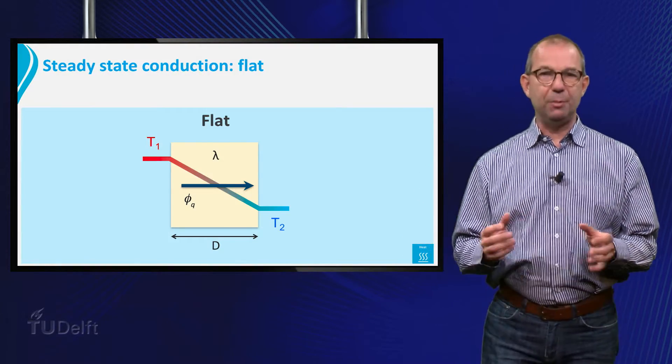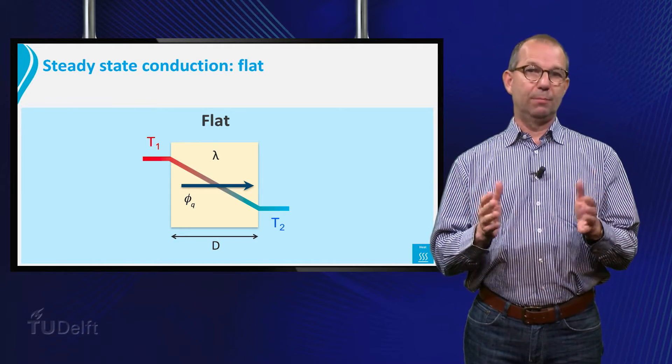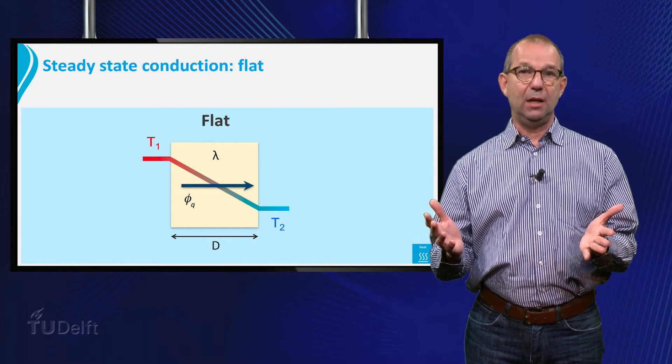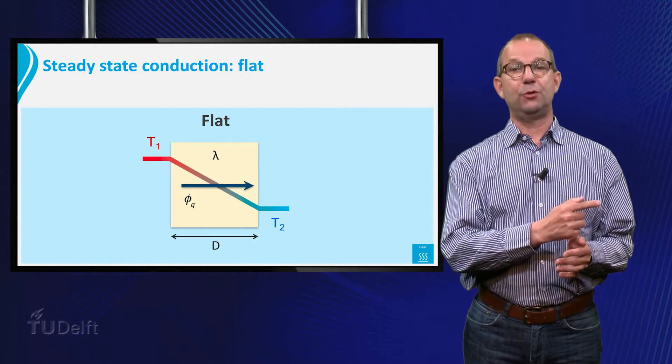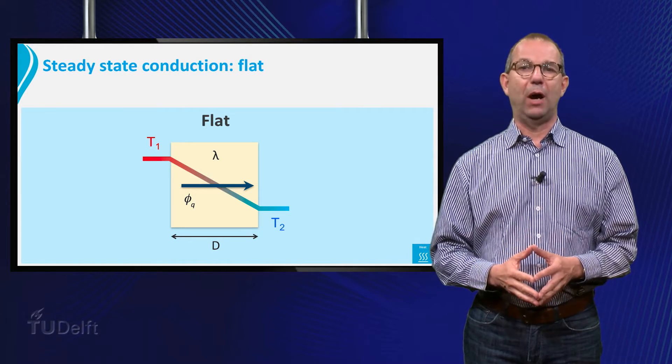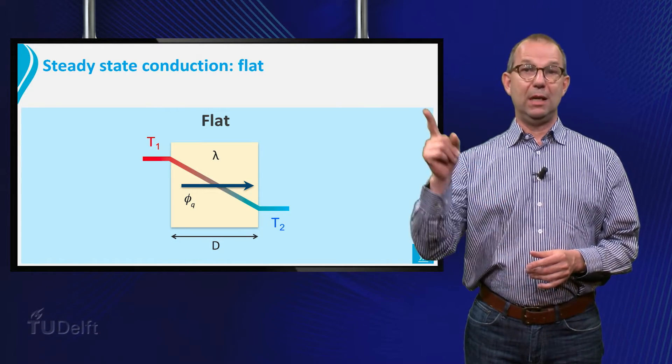We saw that when a strip of material, say a piece of wood, is hot on the left side and cold on the right side, heat is flowing from left to right.